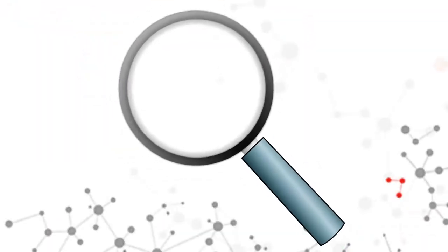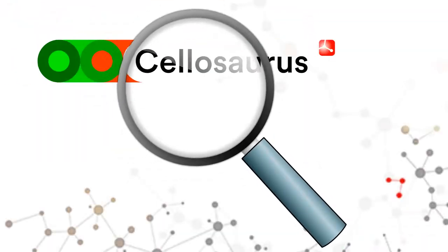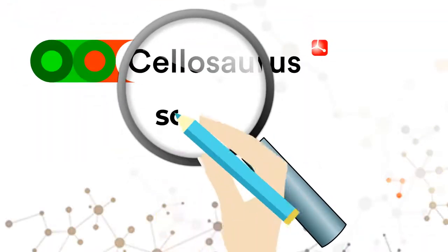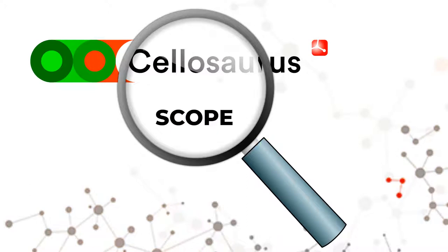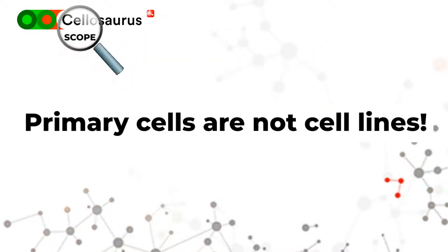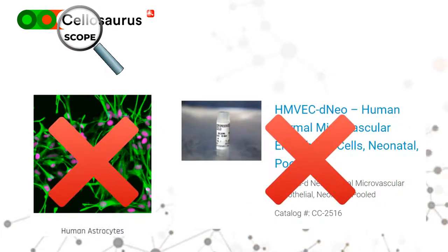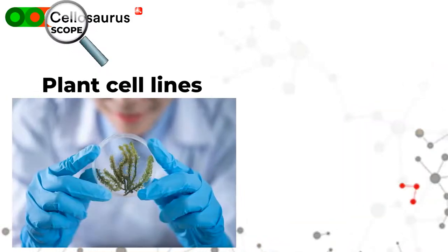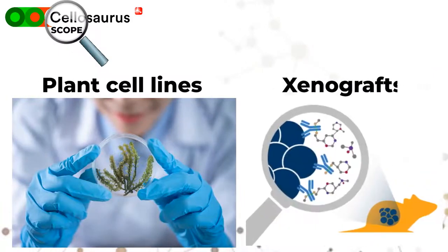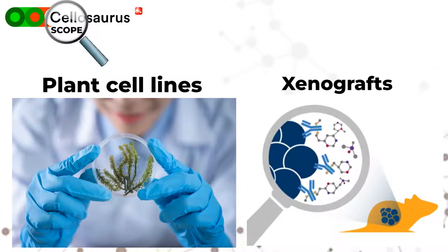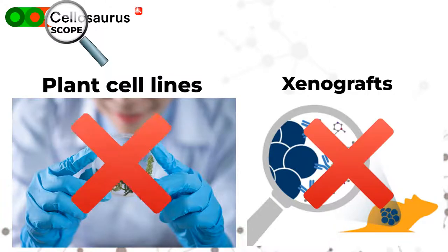Before contacting us, please make sure that your cell line is in the scope of Cellosaurus. Primary cells are not cell lines and not in the scope of Cellosaurus. Plant cell lines and xenografts are not yet included in Cellosaurus.